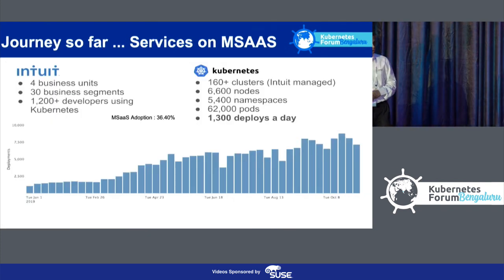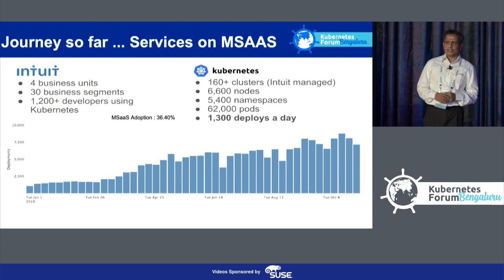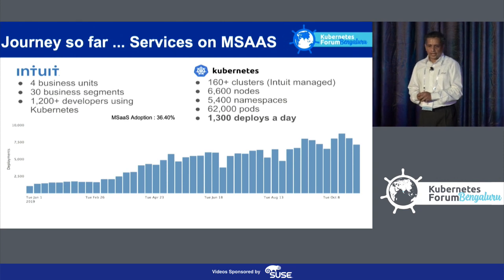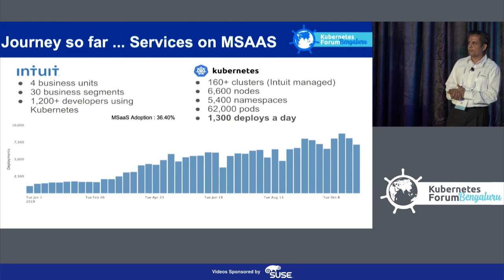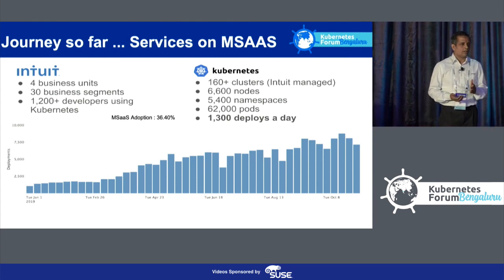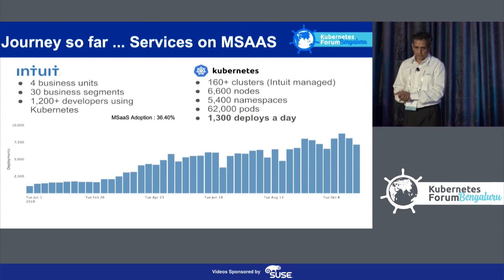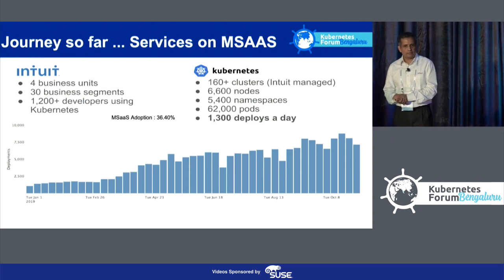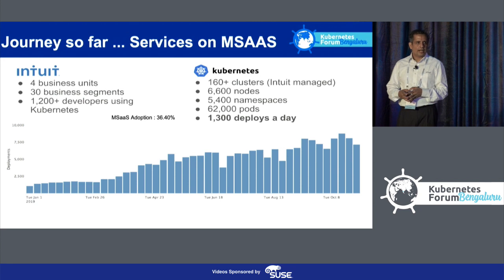This is the scale at which we operate. We have four business units with multiple segments, around 1,200 developers using this platform out of 4,500 total, and 36% of services run on this platform — all started just last January. We have around 160 clusters, 6,000 nodes, more than 5,400 namespaces, 62,000 pods, and around 1,300 deployments every day — and it is still growing.